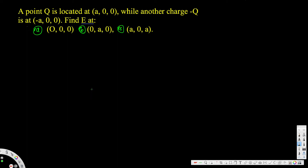Let's look at this problem. The question asks: a point charge q is located at (a, 0, 0) while another charge negative q is located at (negative a, 0, 0). Find the electric field E at (0, 0, 0), (0, a, 0), and (a, 0, a). We are talking about point charges, so let's look at a general example with n point charges.